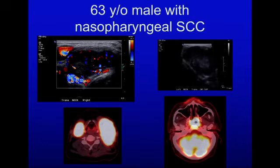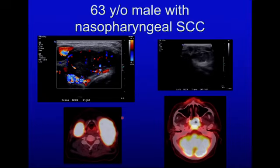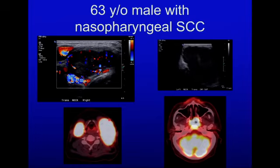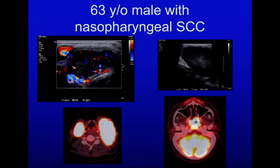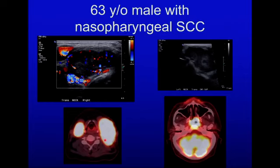Primary tumors are difficult to visualize with ultrasound and are usually imaged with CT, MR, or PET-CT. However, nodal metastases can be visualized with ultrasound. Nodal metastases from nasopharyngeal squamous cell carcinoma tend to be at level two or possibly level three, and occasionally within the intraparotid lymph nodes.